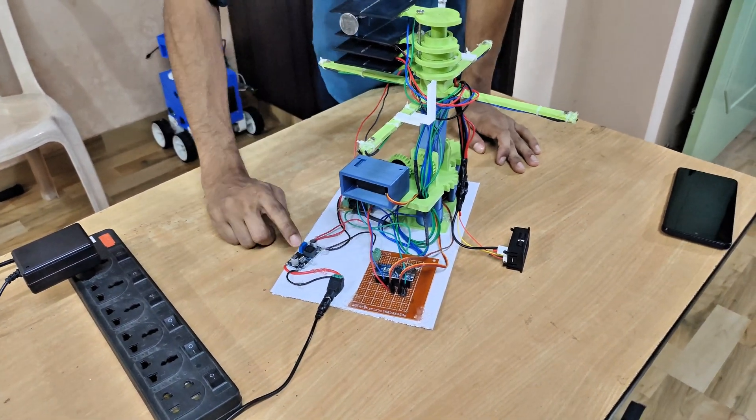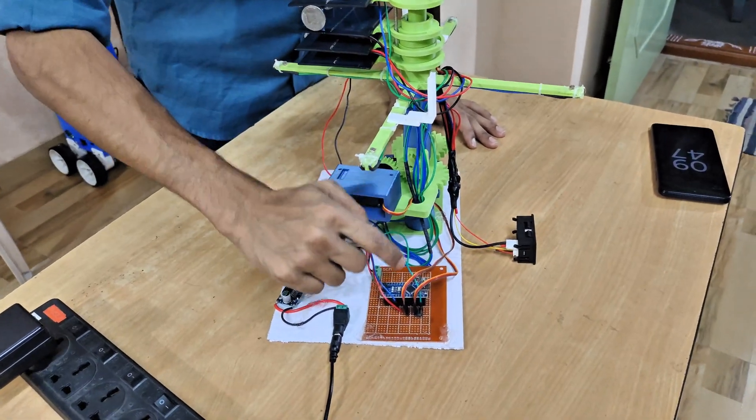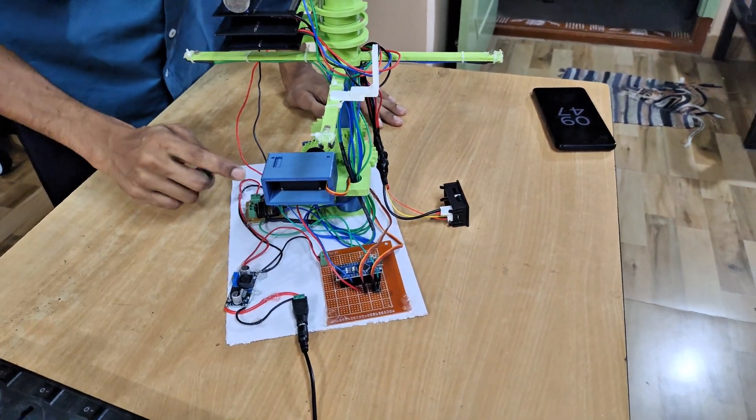The 12V is converted to 5V using a buck converter. This buck converter powers the whole system: Arduino, servo motor, and motor driver.